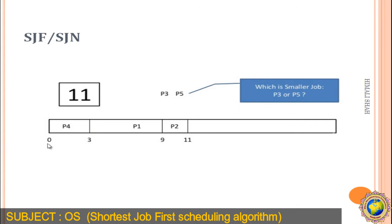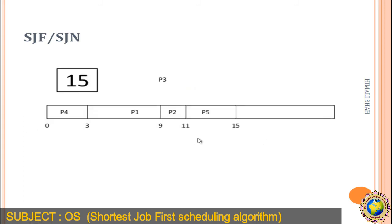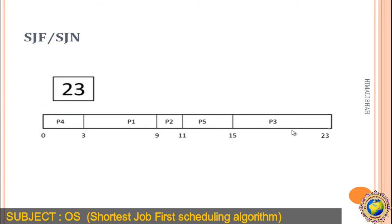The remaining processes are P3 and P5. We check their burst times: P5 is 4 and P3 is 8. The minimum is P5, so P5 executes next for 4 units. 11 plus 4 equals 15, so P5 finishes at time 15. The last remaining process is P3 with burst time 8.